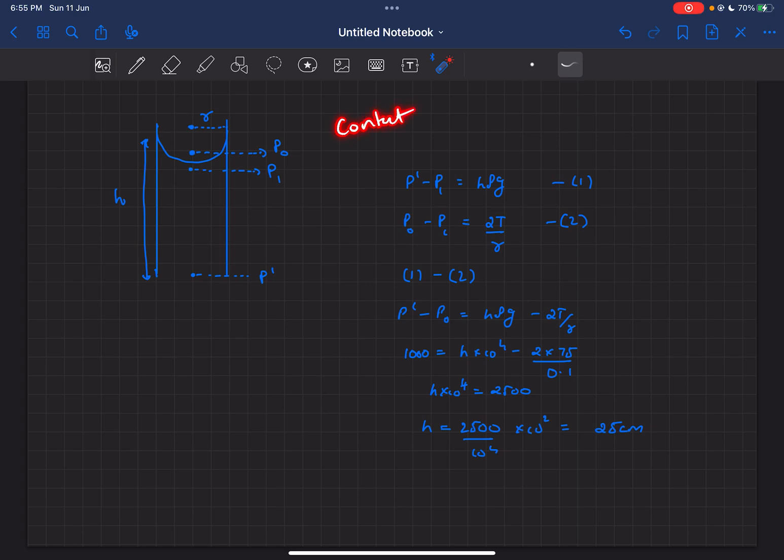What that means is this meniscus would be shaped hemispherically, because the contact angle is basically the angle that a tangent at this point makes with the wall. So if it's zero, the meniscus would be shaped hemispherically.